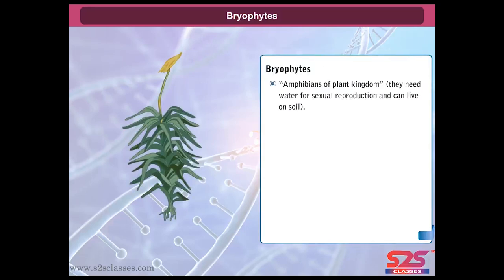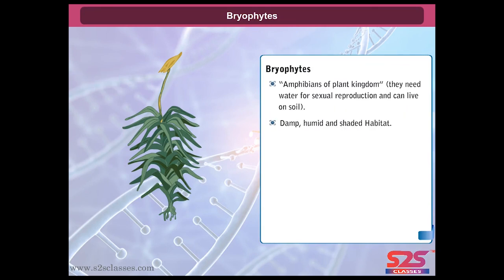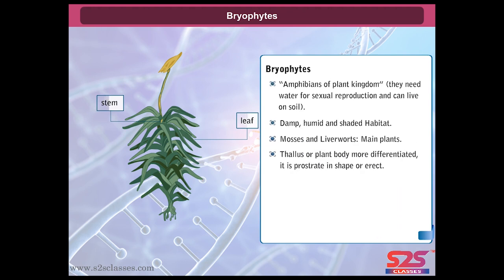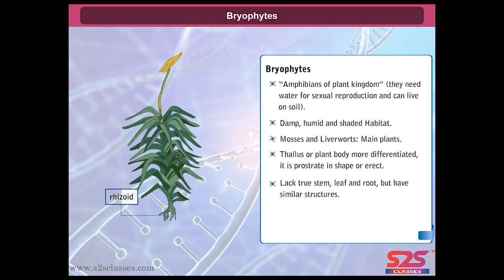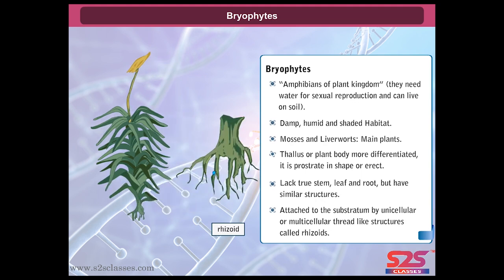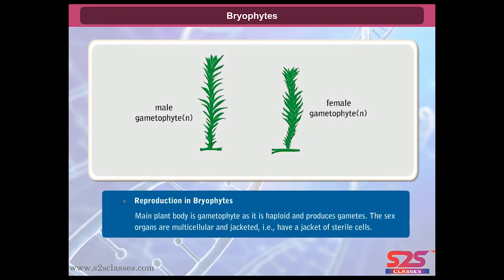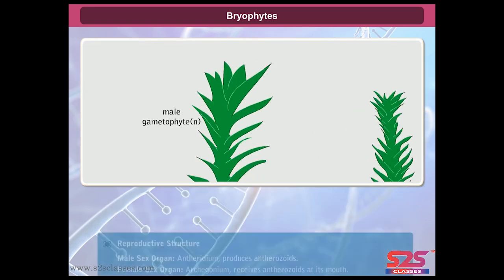Bryophytes are known as the amphibians of the plant kingdom. They need water for sexual reproduction and can live on soil in damp, humid, and shaded habitats — examples include mosses and liverworts. The thallus or plant body is more differentiated, prostrate or erect in shape, and lacks true stem, leaf, and root, but has unicellular or multicellular thread-like structures called rhizoids. The sex organs are multicellular and jacketed, having a jacket of sterile cells.